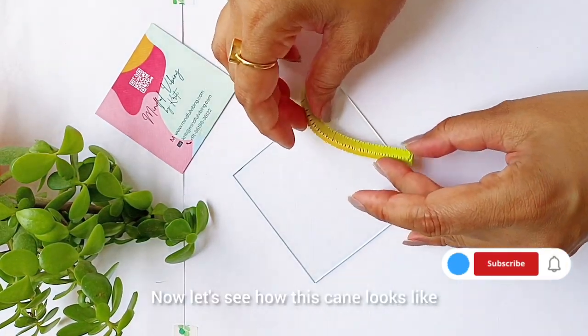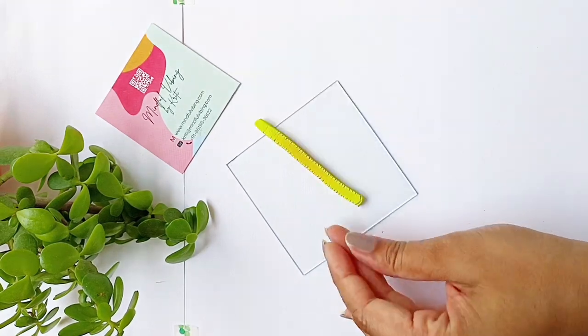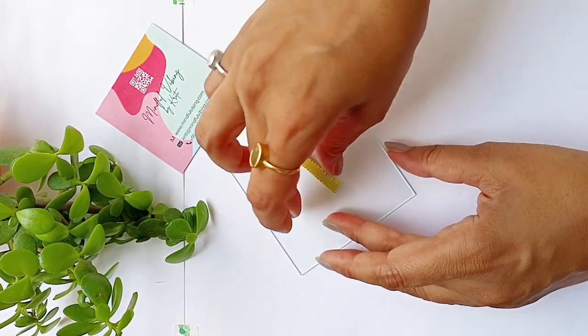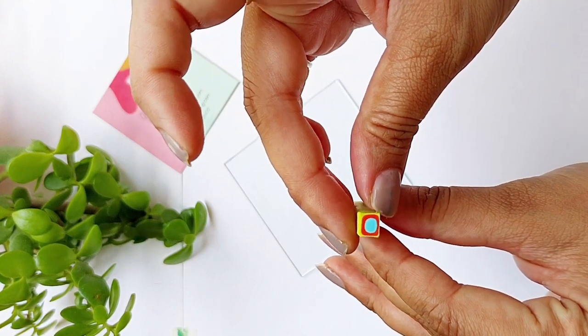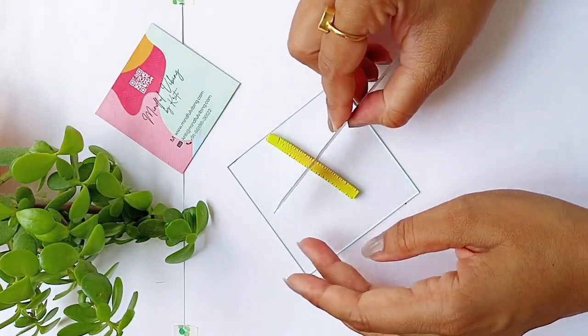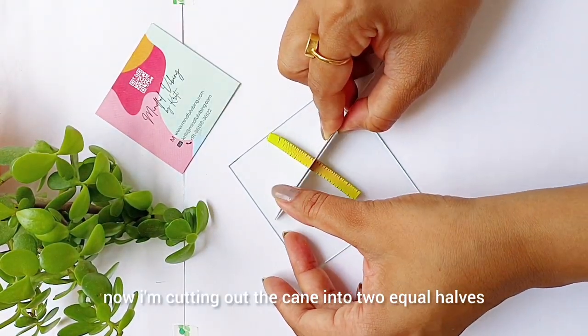Now let's see how this cane looks like. Now I'm cutting out the cane into two equal halves.